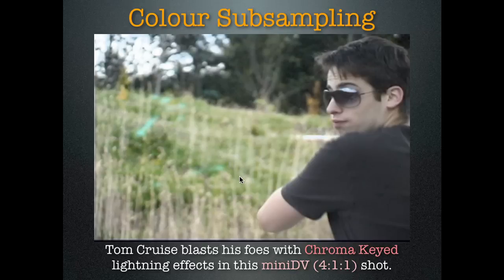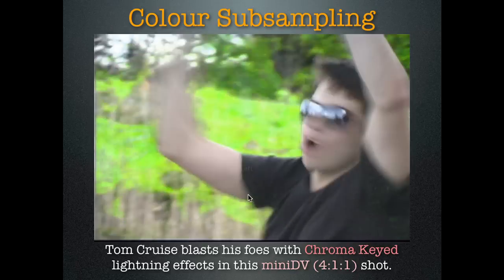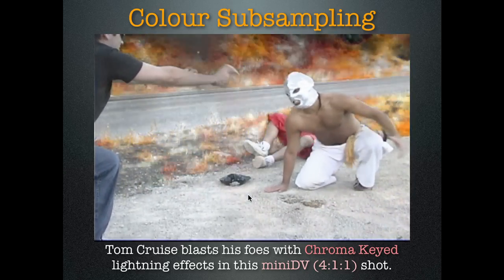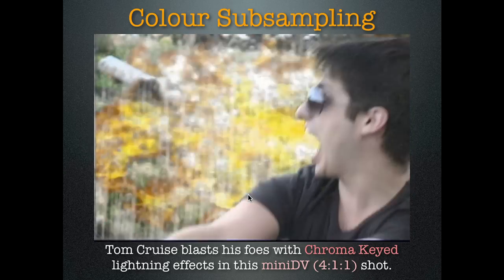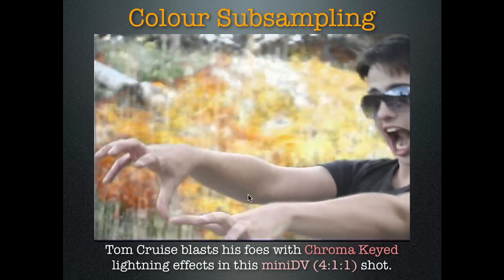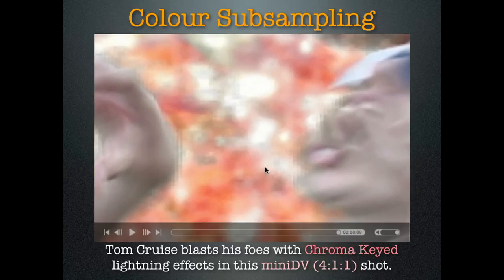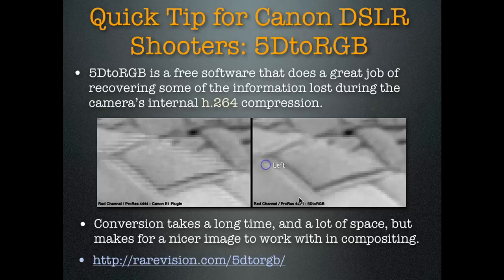Here's an example of Tom Cruise blasting some fools, but this is 4:1:1 color space. Can you see those little jagged edges there? You can really see them. That's terrible.